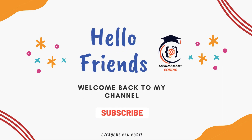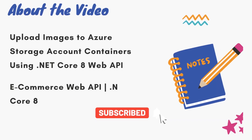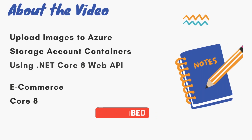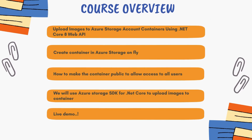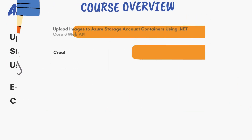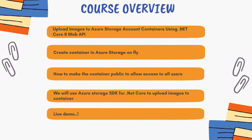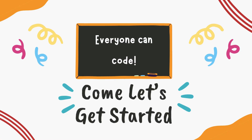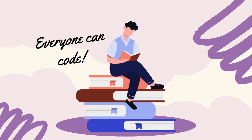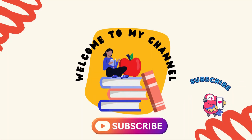Hello everyone, welcome back. In this video I'm going to show you how you can upload images from your .NET Core 8 Web API to the Azure Storage Account. We'll be using the Azure Storage SDK for .NET Core, and we'll do this as part of our e-commerce web application. This is also part of the AZ-204 certification — this is how you'll learn how to use the SDK package to upload blobs to the Azure Storage Account. So without delay, let's get started.